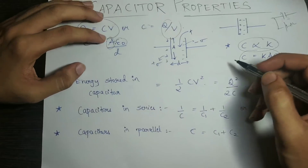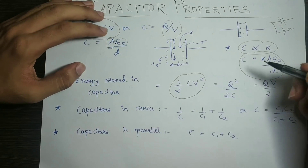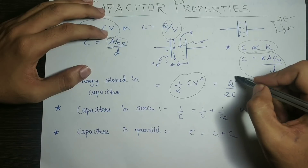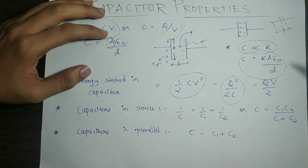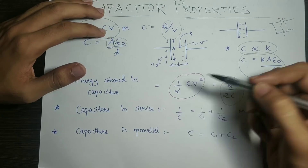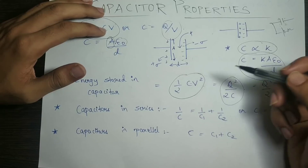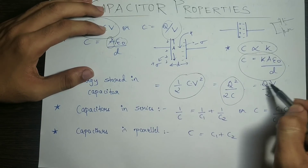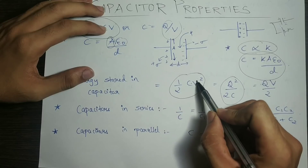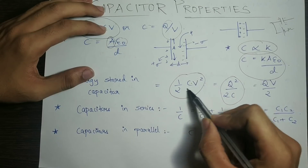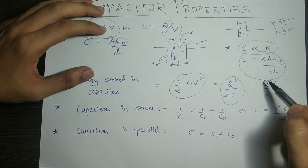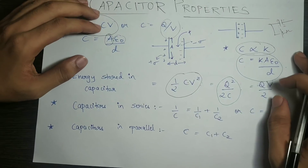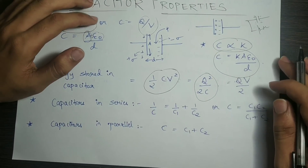Energy stored in a capacitor is U equals ½CV². You can also convert this to q²/2C. Substituting, cv²/2c simplifies to qV/2. The form you use depends on what the problem gives you.